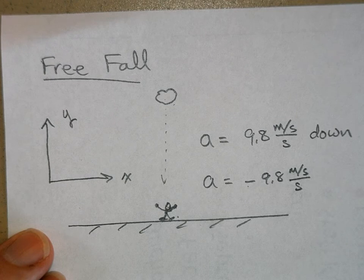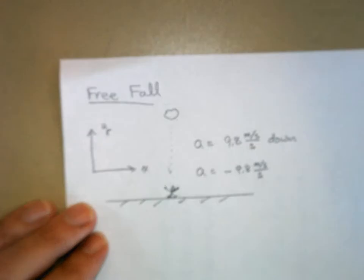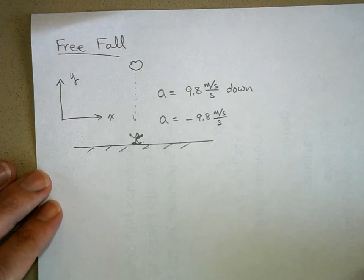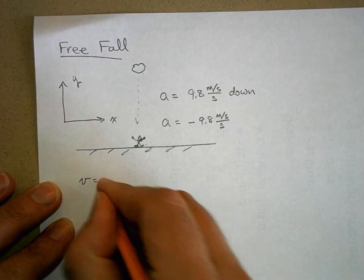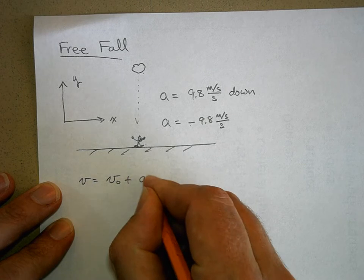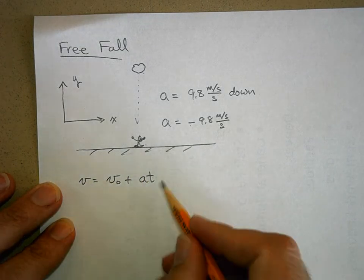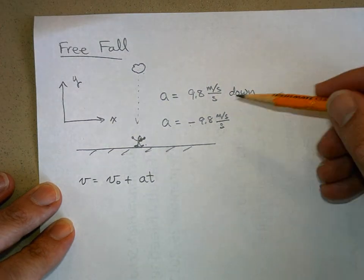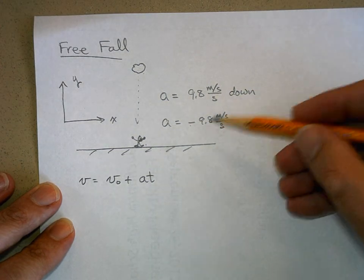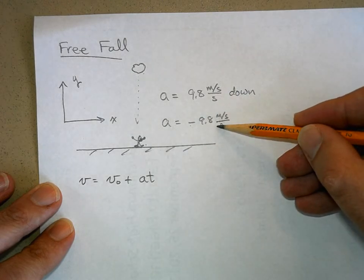Now we have the kinematic equations that we've been using, so let me review them. We said that V equals V naught plus AT. Now nothing about free fall changes that. I mean just all we're going to do differently now is say, the acceleration is 9.8 meters per second every second,